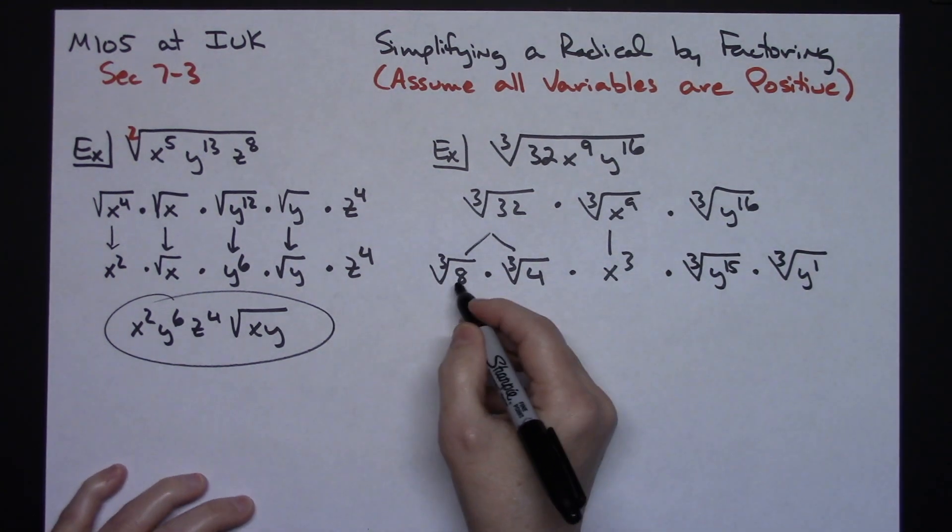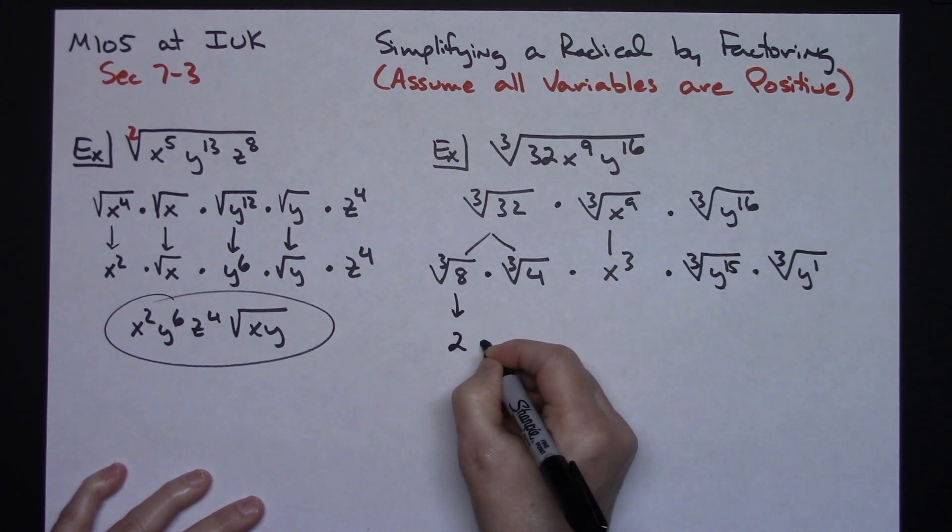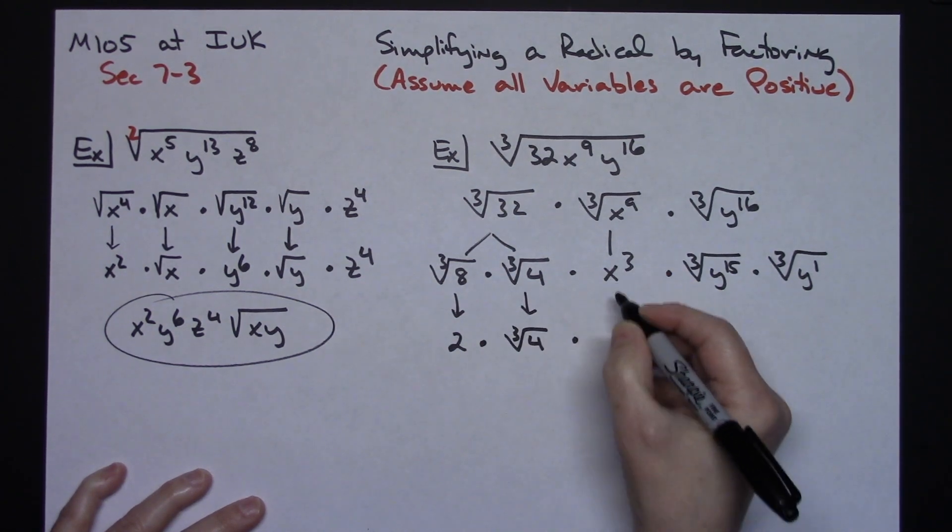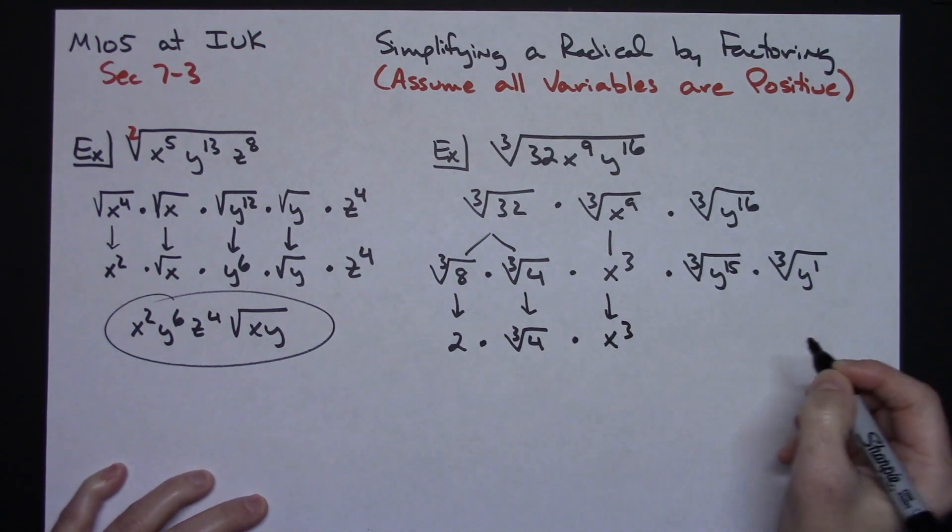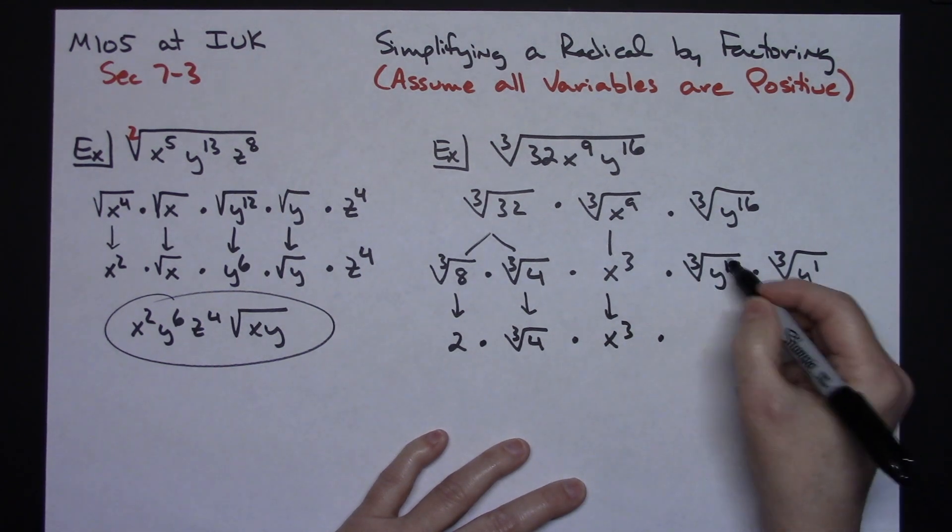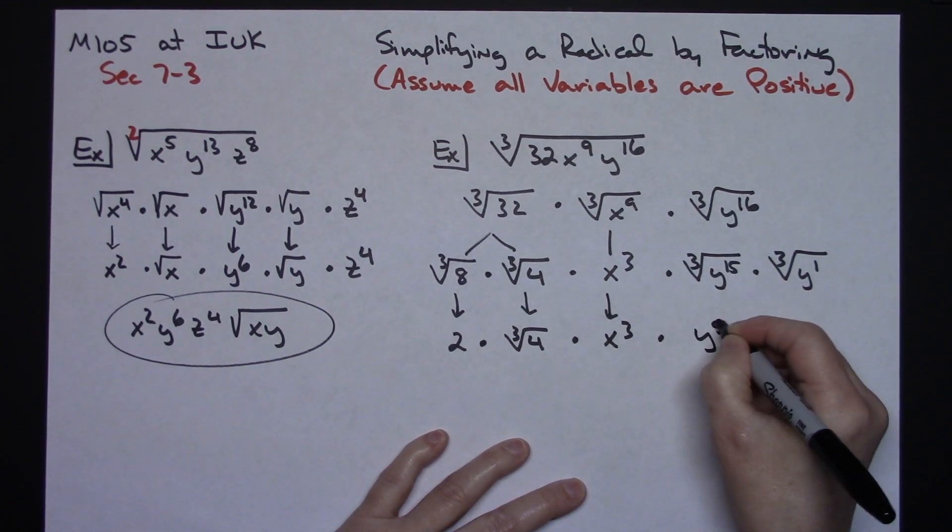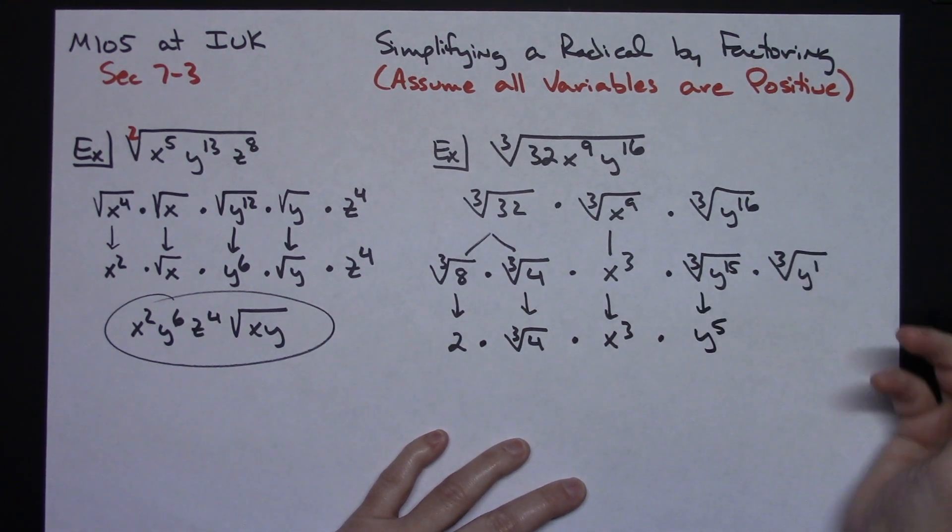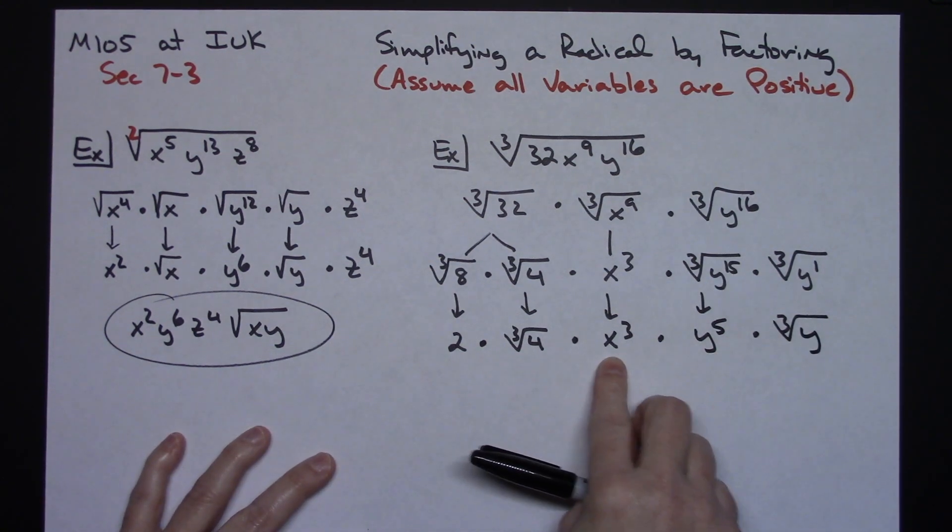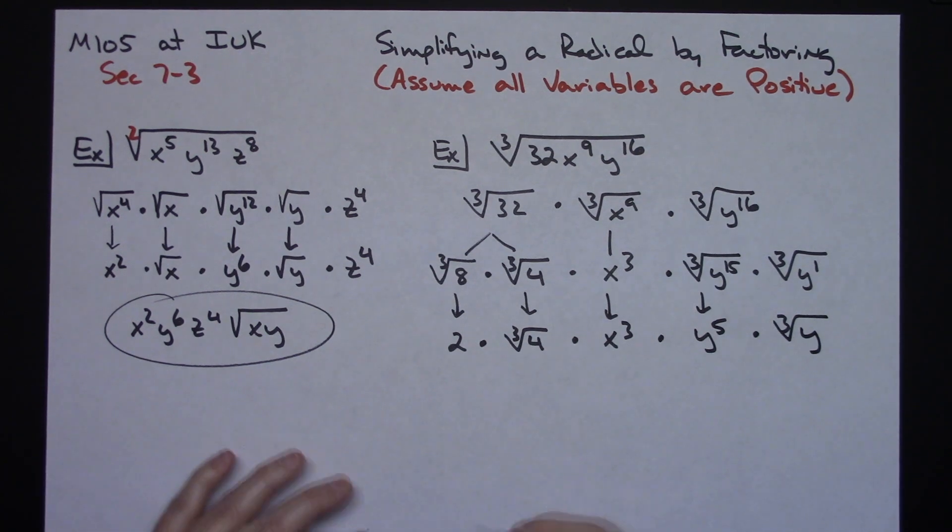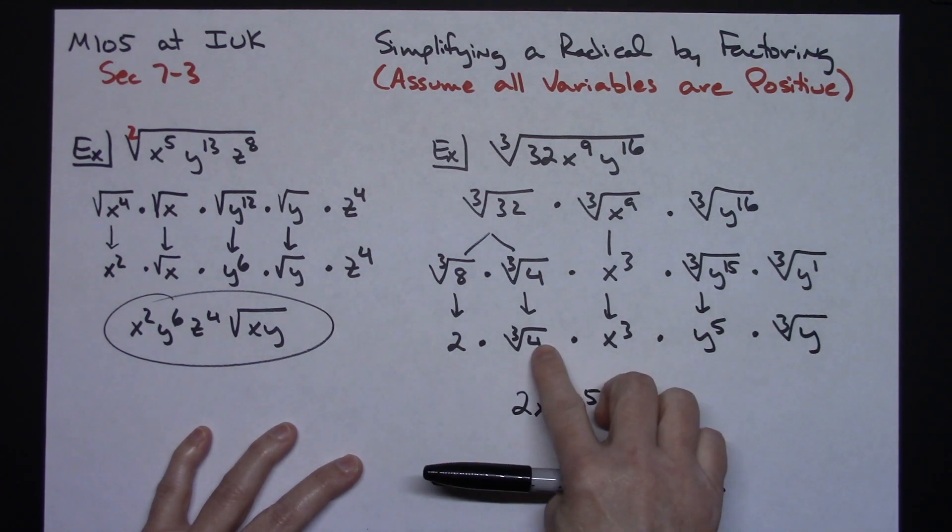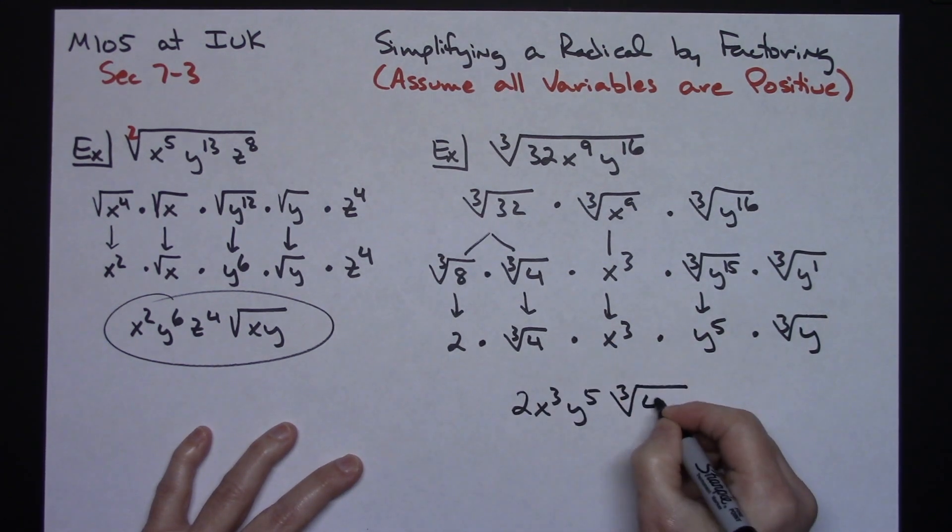Now I'm going to go through. Cube root of 8, we know, is a 2. Cube root of 4, I cannot simplify anymore, so I'm just going to keep that right the way it is. This has already been done, so I'm just going to have an x to the third there. This one I can divide. 15 divided by 3 is 5, so that means this is a perfect cube root. So I'll have a y to the fifth right there. And then this one divided by 3, can't do that. I just have to leave the cube root of y there alone. Everything that has been pulled out of the radical gets multiplied together out in front. So 2, x to the third, y to the fifth. Everything left underneath that cube root stays, so cube root of 4y.